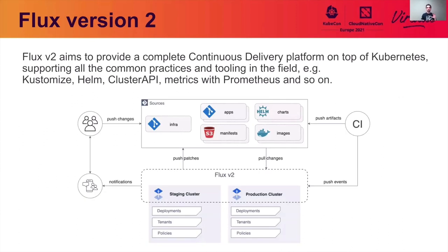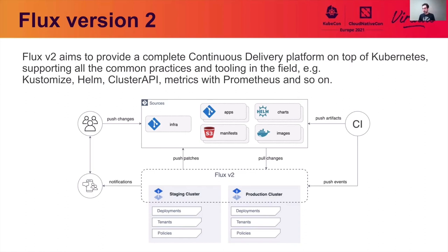If Flux version 1 was a monolithic tool that could reconcile a cluster state from a single Git repository, with version 2 we have a different aim. We want to provide the complete continuous delivery platform on top of Kubernetes with support for common practices and popular tools in this field, such as Kustomize, Helm, and the new Cluster API. We also offer observability inside your delivery pipelines.